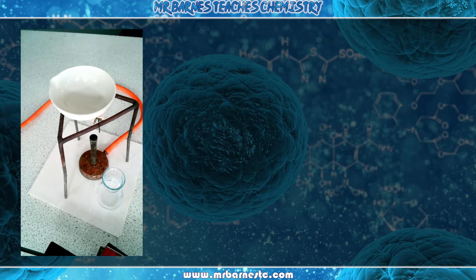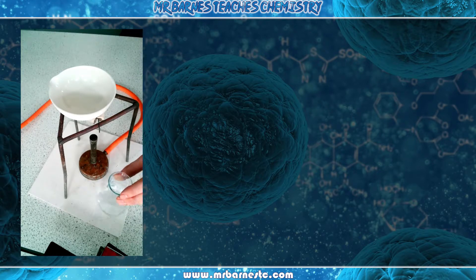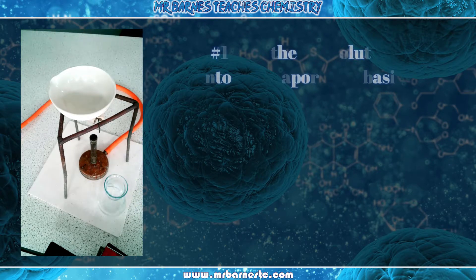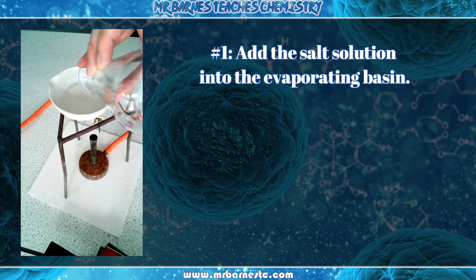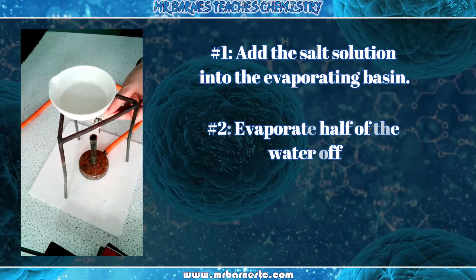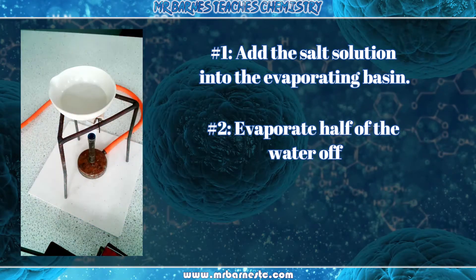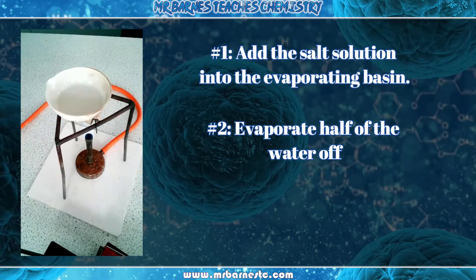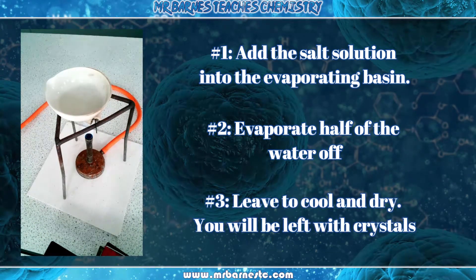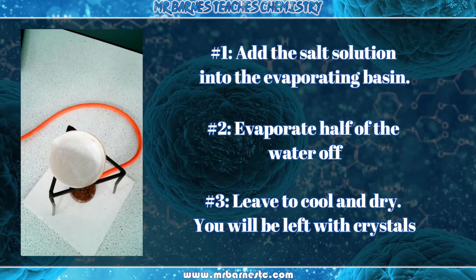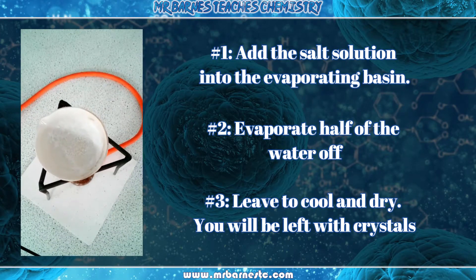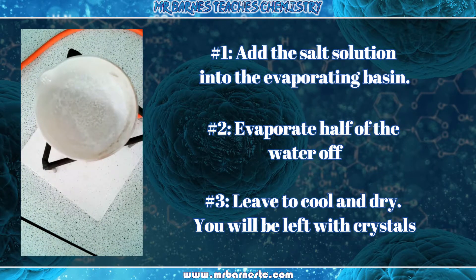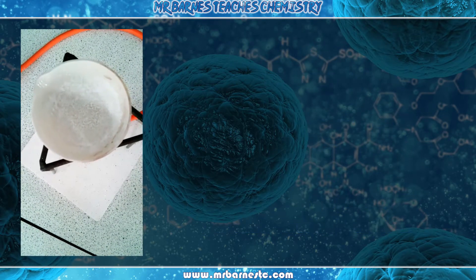In my conical flask on the right you can see I've got a solution. That solution is salt water, and what I want to do is recover my crystals of salt. So I'm going to put it into my evaporating basin and turn my Bunsen burner on. As you can see — I've sped up the video here — as that water evaporates you start to get crystals of salt forming, and at the end you can see my white crystals of salt.